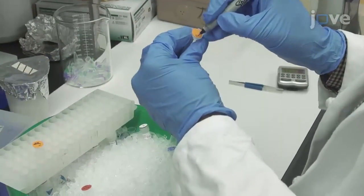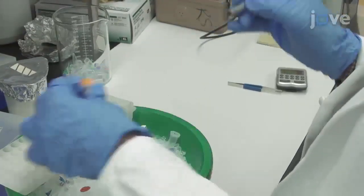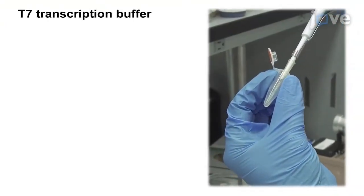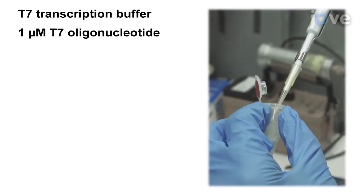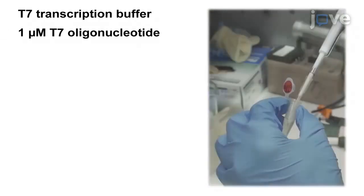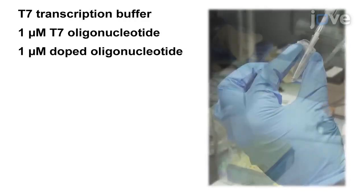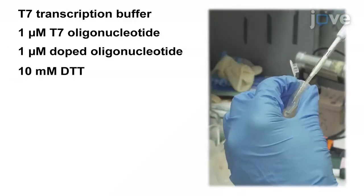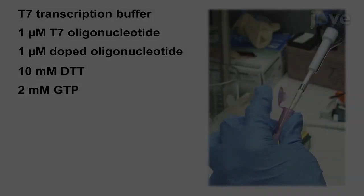Synthesize RNAs for each phosphorothioate in a 20 µL transcription reaction. To each microcentrifuge tube, add the following: T7 transcription buffer, 1 µM T7 oligonucleotide, 1 µM doped oligonucleotide, 10 mM DTT, and 2 mM GTP.